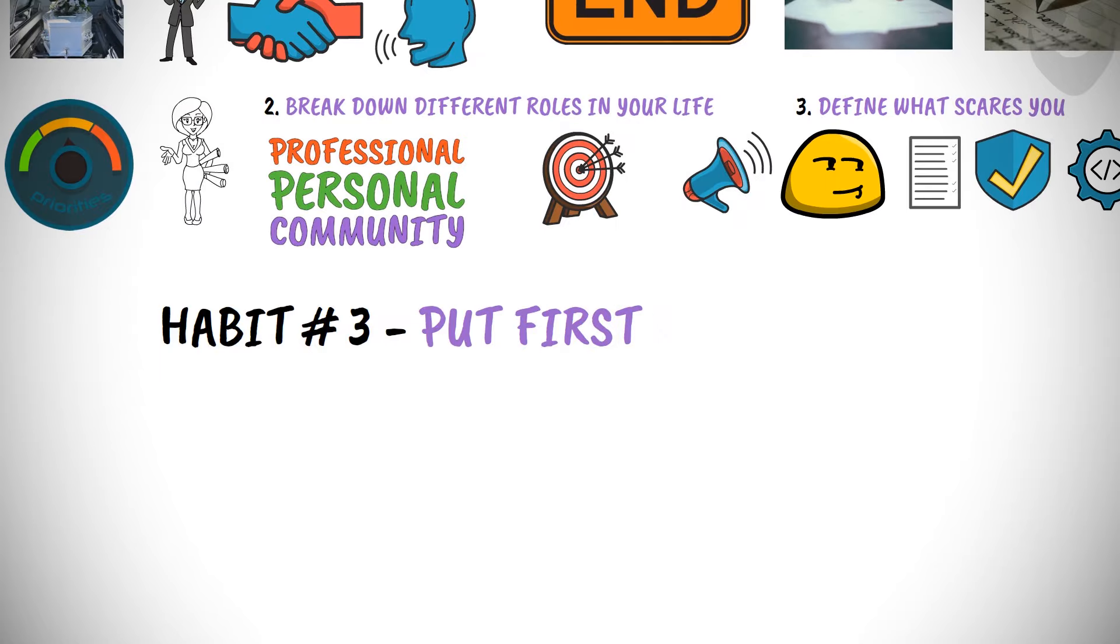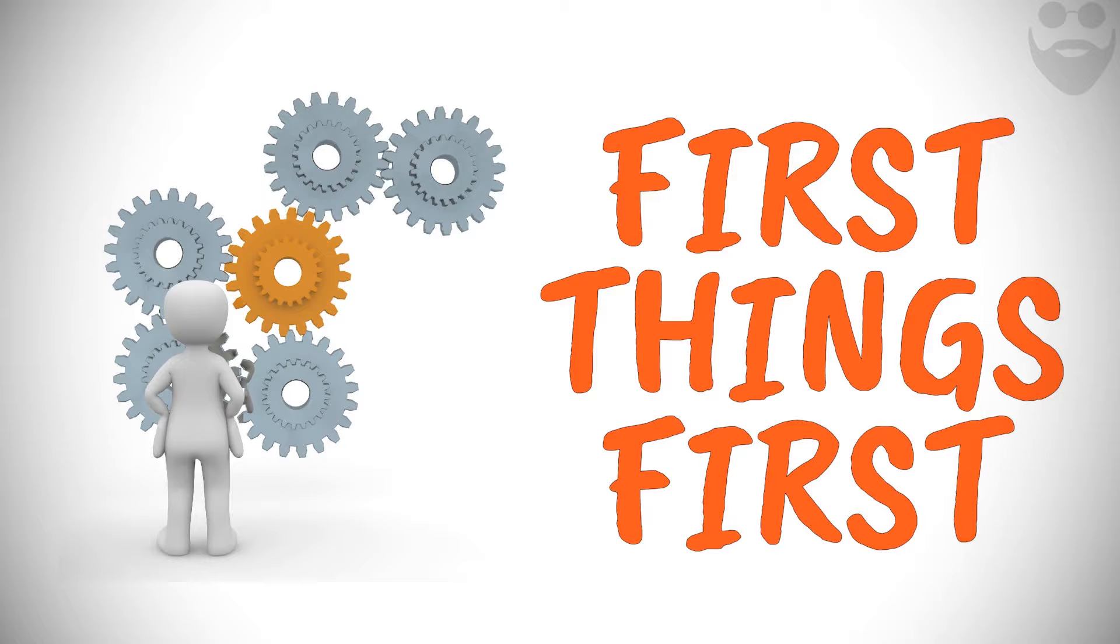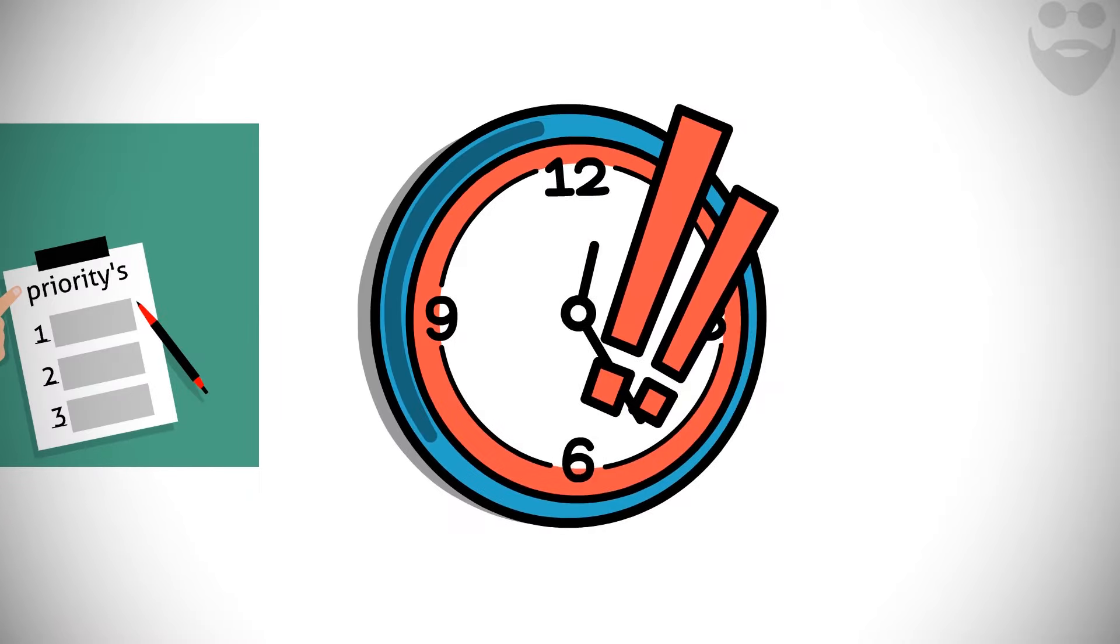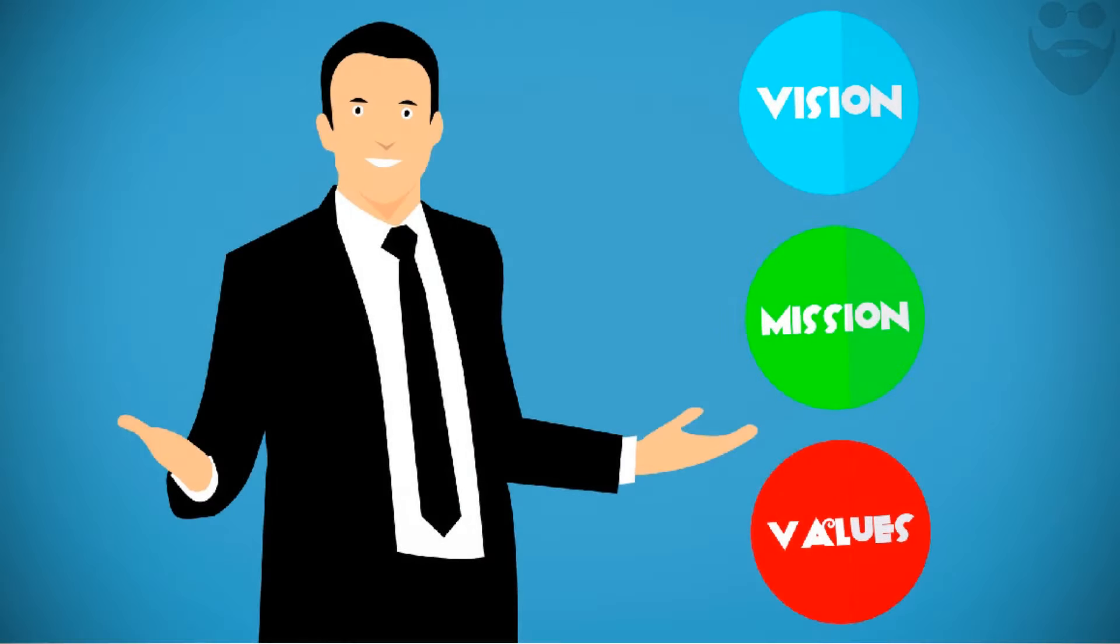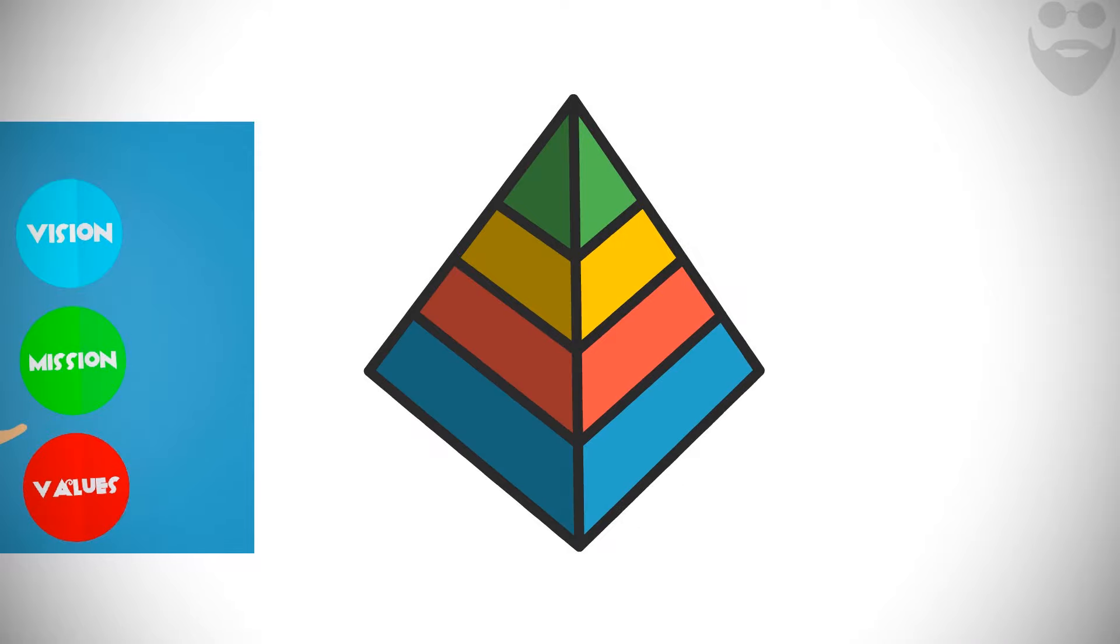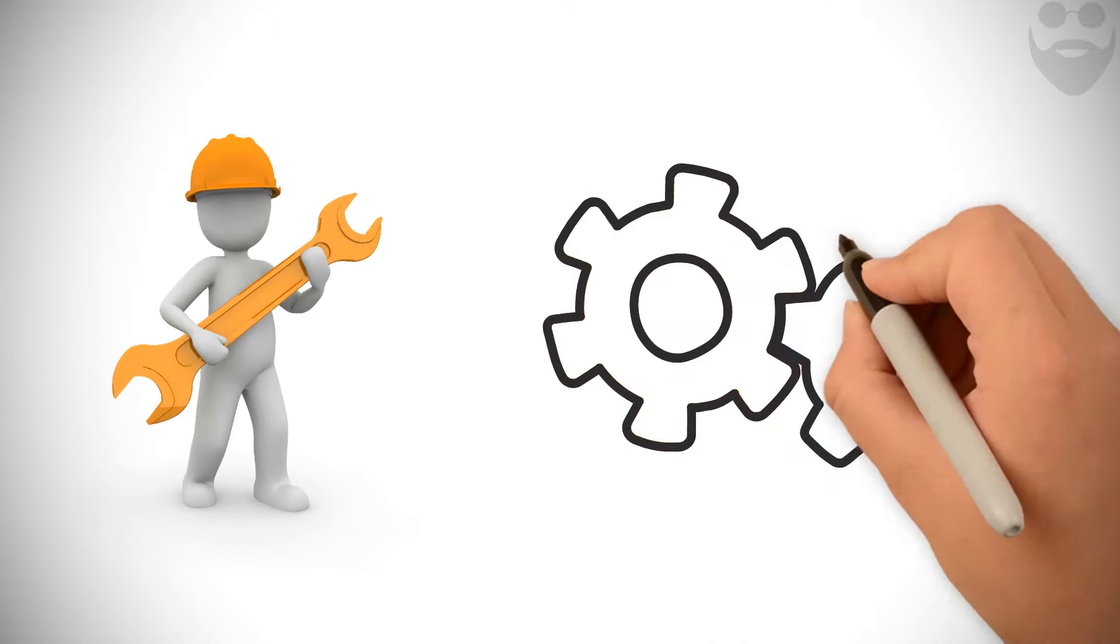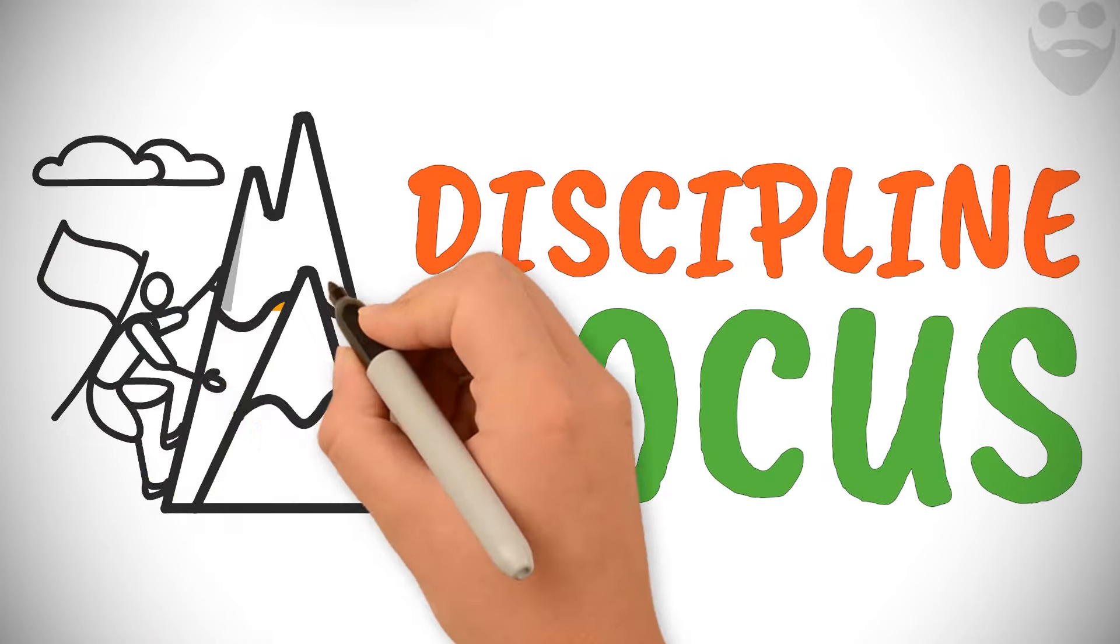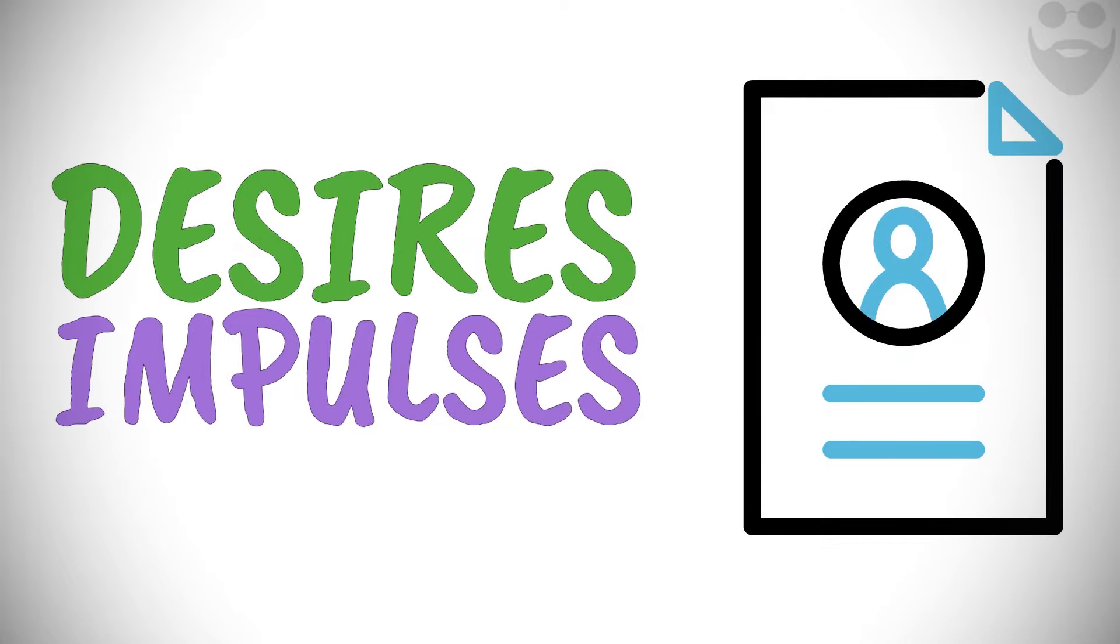Habit number 3: Put first things first. In order to manage ourselves effectively, we must put first things first. We must have the discipline to prioritize our day-to-day actions based on what is the most important, not what is the most urgent. In Habit 2, we discussed the importance of determining our values and understanding what it is we are setting out to achieve. Habit 3 is about actually going after these goals and executing on our priorities on a day-to-day and moment-to-moment basis. In order to maintain the discipline and focus to stay on track towards our goals, we need to have the willpower to do something when we don't want to do it. We need to act according to our values rather than our desires or impulses at any given moment.